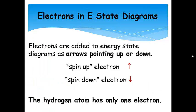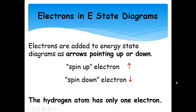Now we're going to start adding electrons to our energy state diagrams, slotting them into the orbitals they occupy. We're going to use arrows to indicate electrons in orbitals — spin up pointing up, spin down pointing down.